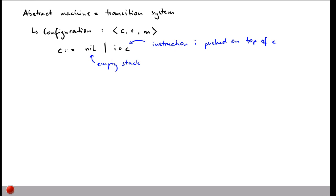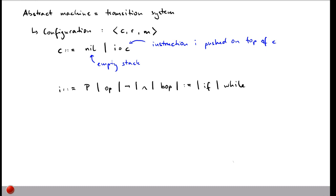An instruction i can be any program p — the same p used when we defined the syntax of SIMP. It can also be an operation (all the operations in our program), a negation operator, logical AND, a Boolean operator, an assignment, the if keyword, or the while keyword. You've seen all these symbols before, and now we'll define the semantics of actually executing them.